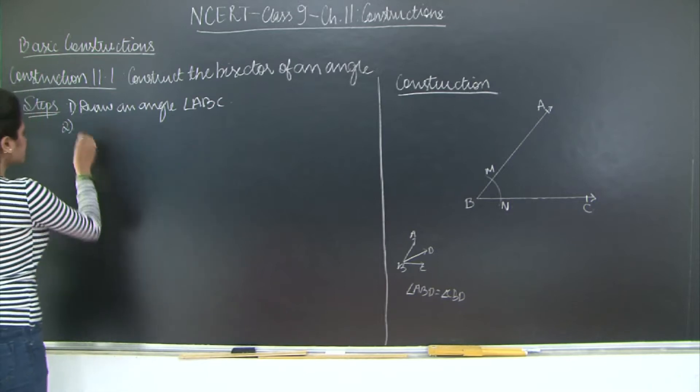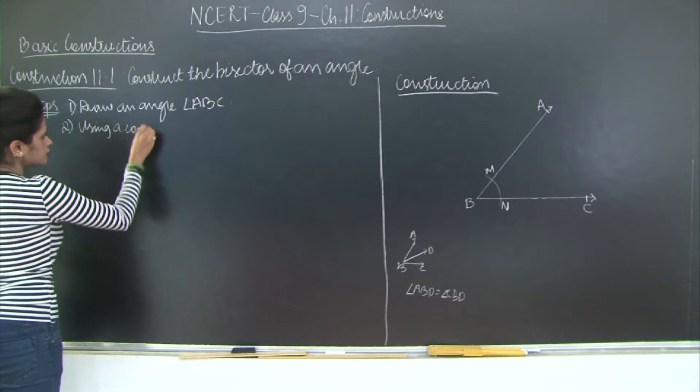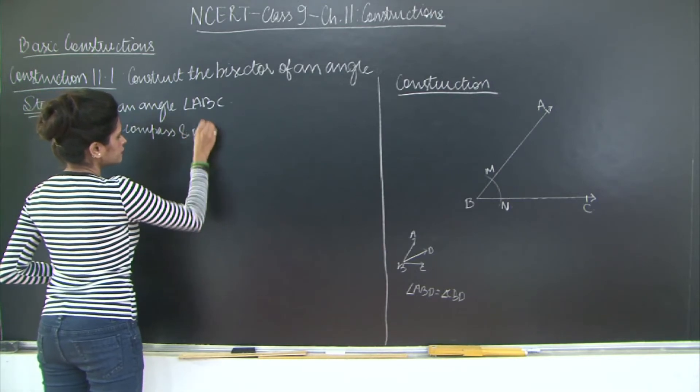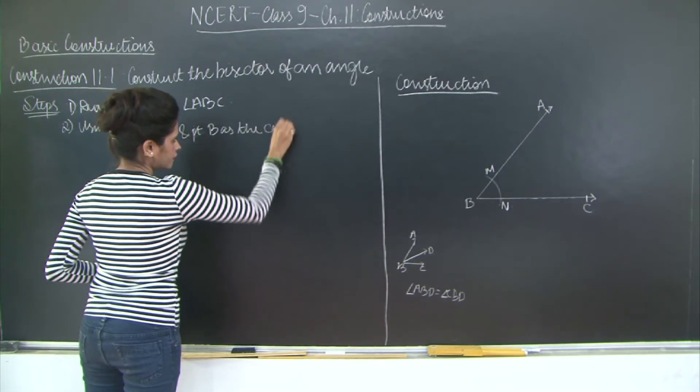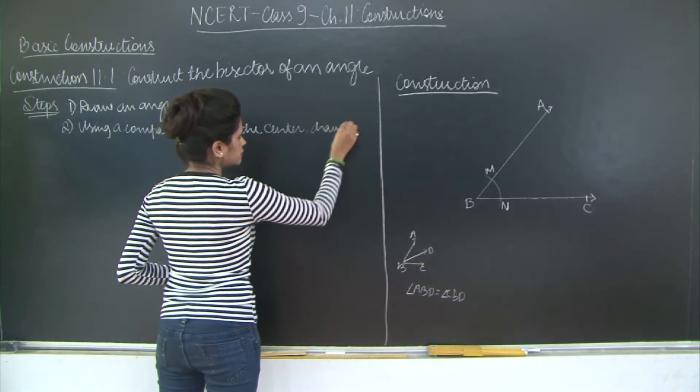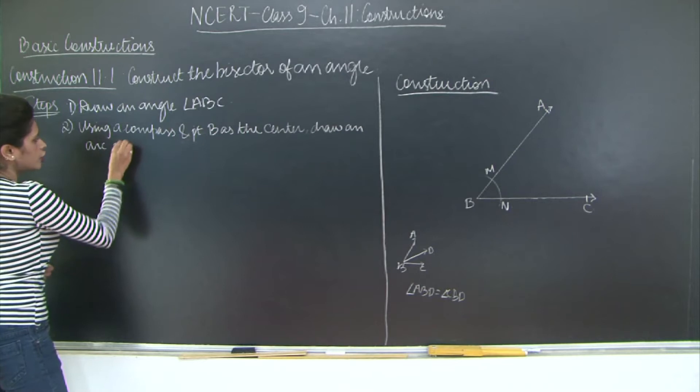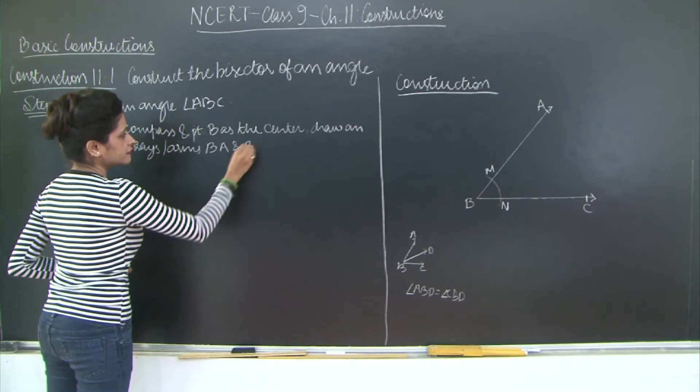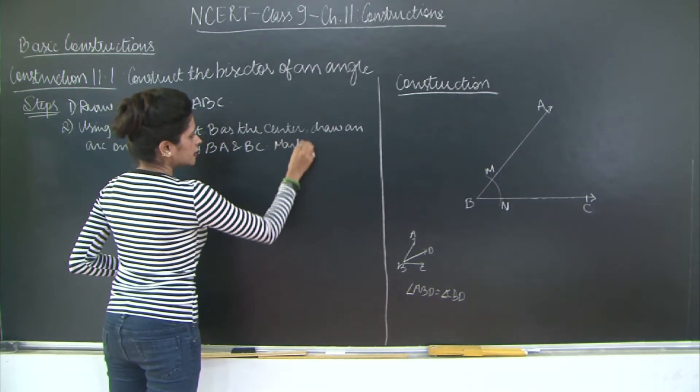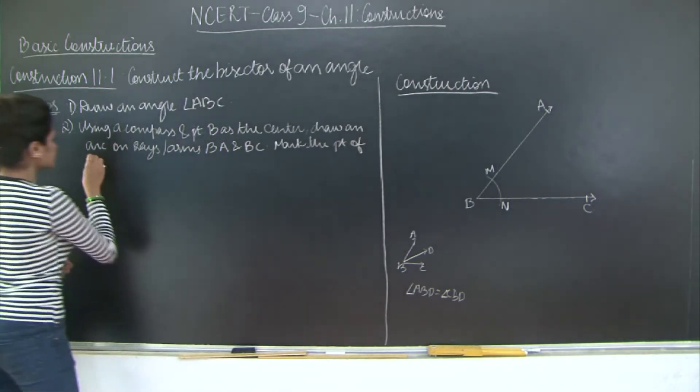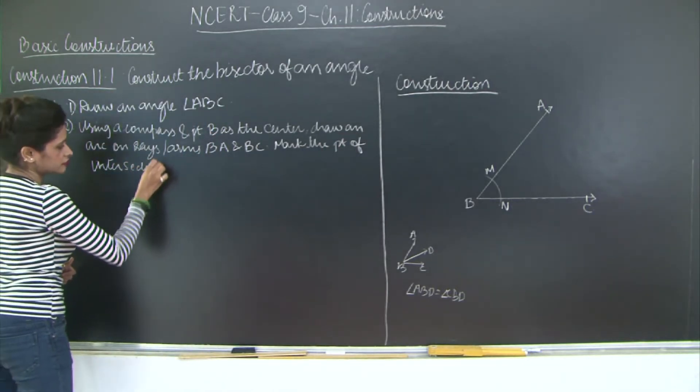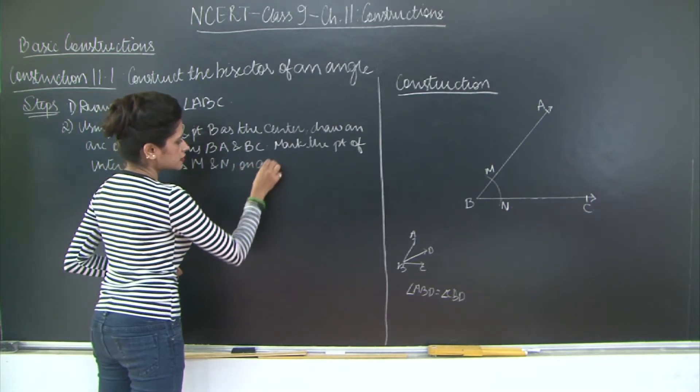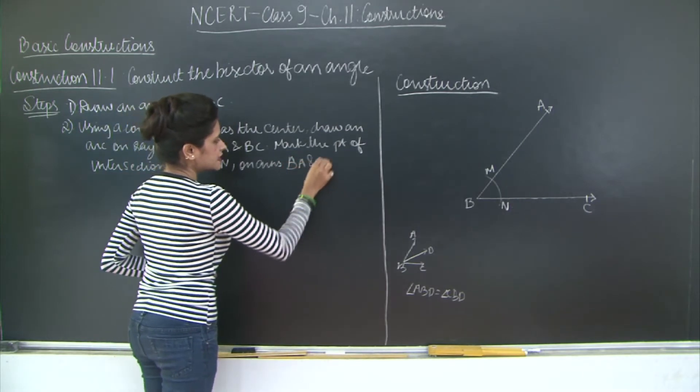The second step was using a compass construct with B as the center. So here draw an arc on arms or on rays or arms BA and BC. Then mark the point of intersection as M and N on arms BA and BC respectively.